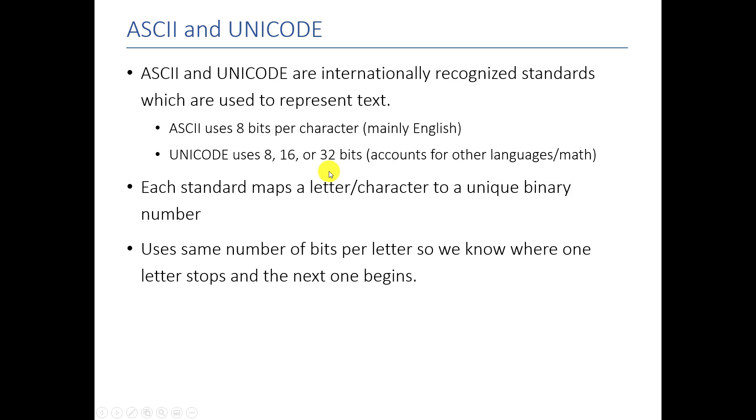So 2 to the 32 is just over 4 billion, so it can represent a lot of different values. And basically, all we're doing is, completely arbitrary, we are mapping each letter or character to a unique binary number. And then we are going to use the same number of bits per letter so that we know where one letter stops and the other one begins.